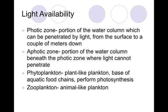Light availability is important because the amount of light that can penetrate is going to affect what type of organisms can live there. The photic zone is the area where light can penetrate — from the surface to about a couple meters down. The aphotic zone — we know the prefix 'a' means no or non — is the portion of water beneath the photic zone where light can't penetrate. Phytoplankton — 'phyto' meaning plant — is plant-like plankton and it is the base of our aquatic food chains, performing photosynthesis. We also have zooplankton, which are animal-like plankton and a primary food source for many saltwater and freshwater environments.